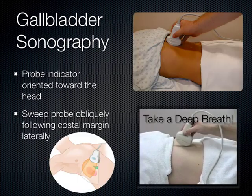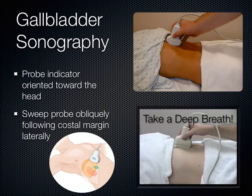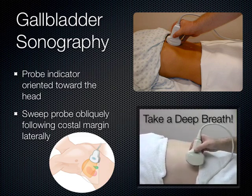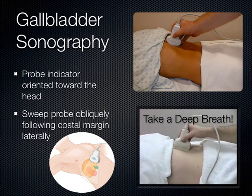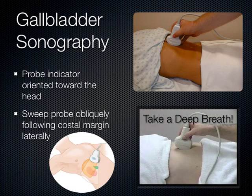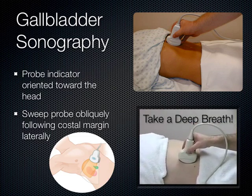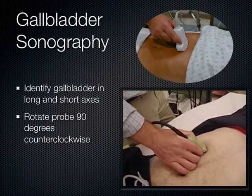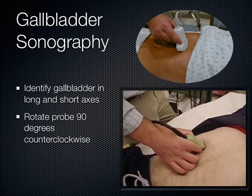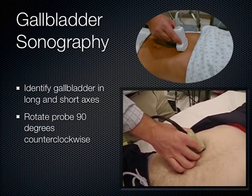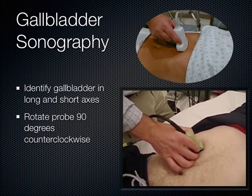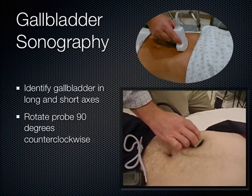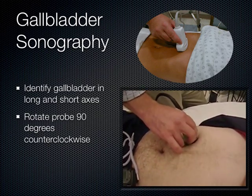Now for the gallbladder: aim the indicator towards the patient's head in a sagittal plane, have the patient take a deep breath — this is the subcostal sweep. Once you get the gallbladder in long axis, rotate the probe 90 degrees to get the short axis. Fan through the entire gallbladder in both planes looking for pathology.